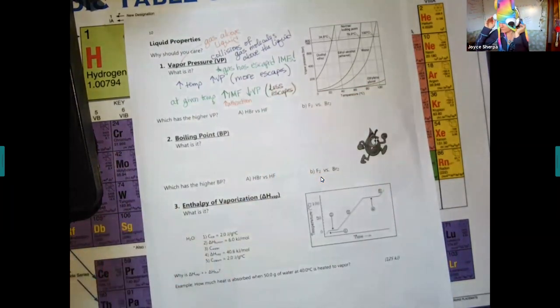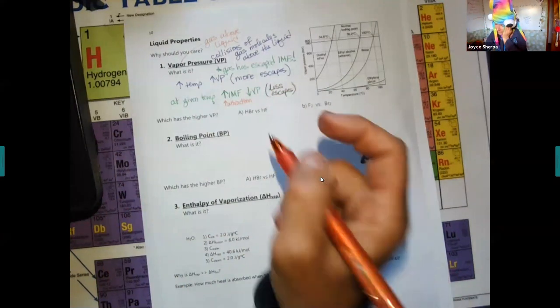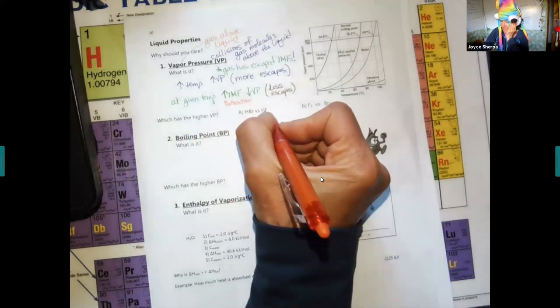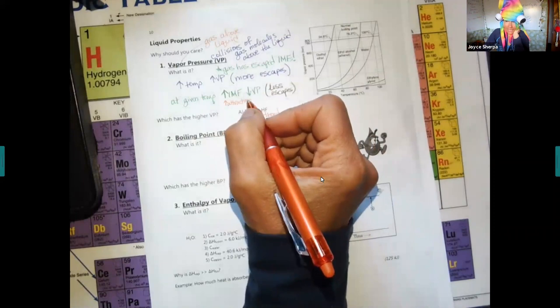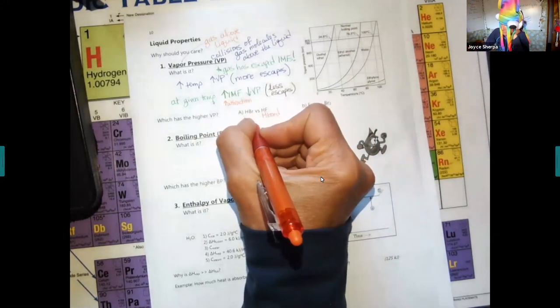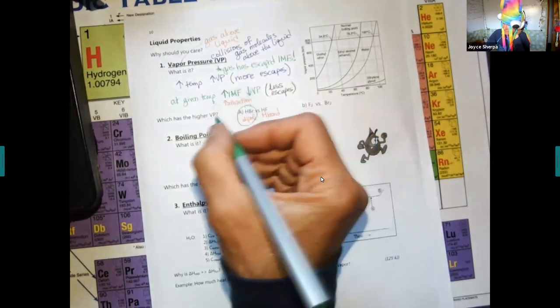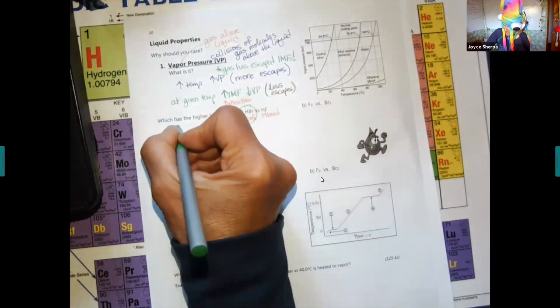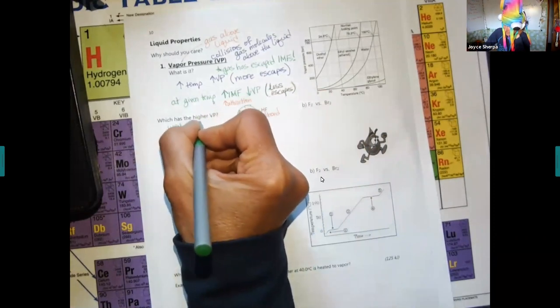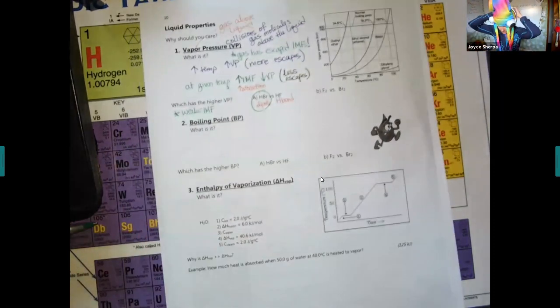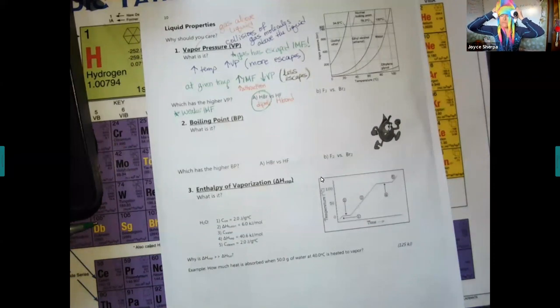If we compare these, which has a higher vapor pressure? This is an H bond because we see the NOS. This is a dipole. You want to pick the weaker one. That is the key for vapor pressure. All those charts we did today from weakest to strongest, the weakest would win this for vapor pressure.